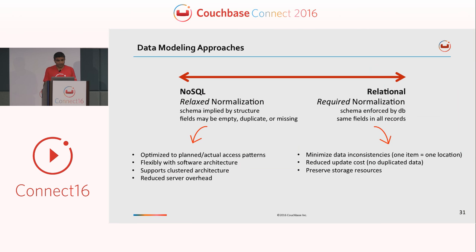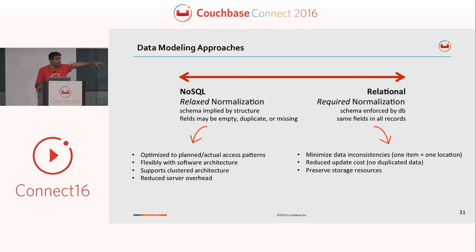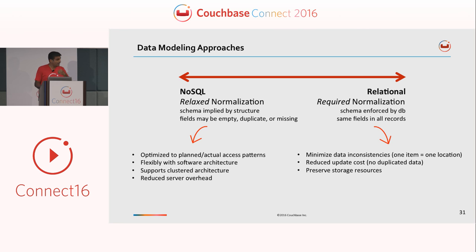Data modeling approaches: when we talk about the relational world, we talk about normalization. The major agenda of normalization is to reduce any kind of redundancy. But what happens when you normalize and normalize and normalize? It comes with a cost — the cost of joins. You join on this table, and this table, and this table to retrieve your data. But in non-relational databases like Couchbase, we have relaxed normalization. The biggest advantage we get with relaxed normalization is flexibility, and it supports clustered architecture, giving you reduced server overhead.